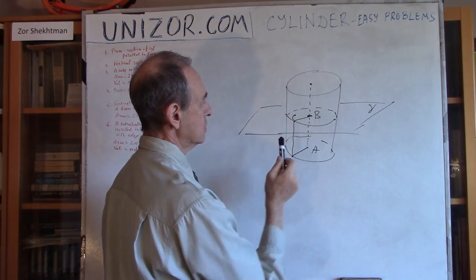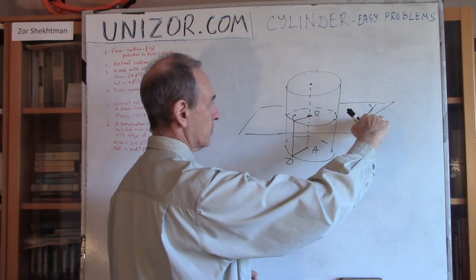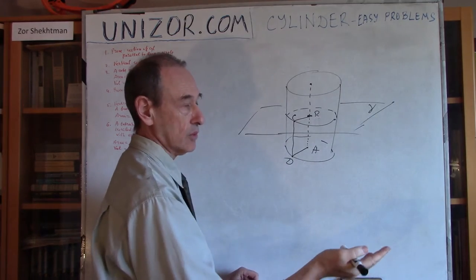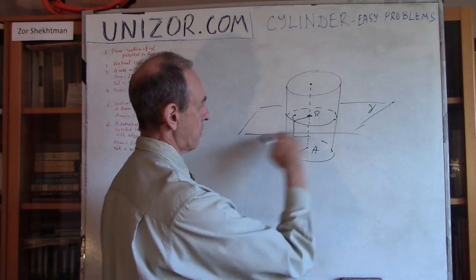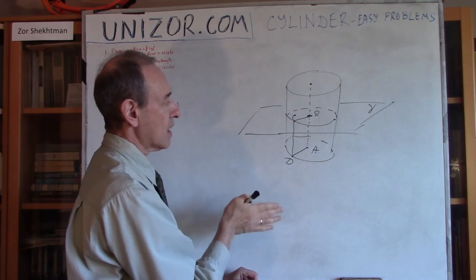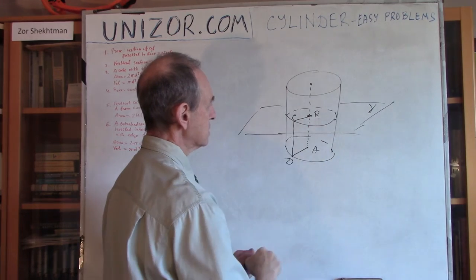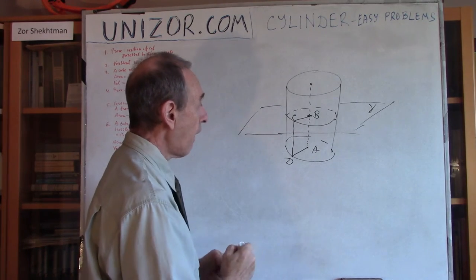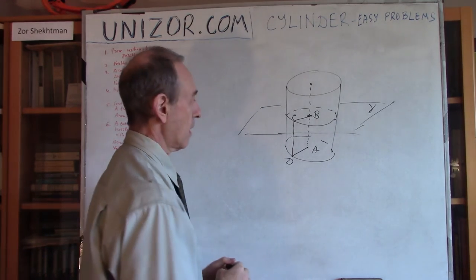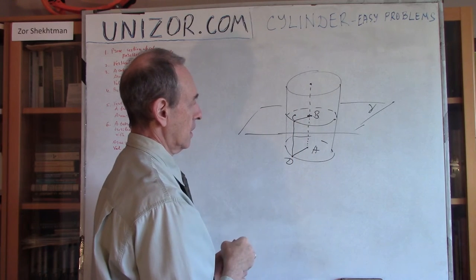Now, AB is parallel to CD because they are both perpendicular by construction. Now BC and AD are also parallel. Why? Consider the two planes — the gamma plane, which is my section, and the base plane — they are parallel among themselves, because that's exactly how I said I will draw gamma in this particular case: it's parallel to the base. So they are parallel to each other, the section and the bottom base. Now ABCD is a plane which cuts them both. So AD and BC are intersections of the plane which cuts two parallel planes, and there is a theorem that they are parallel to themselves. So BC and AD are parallel, and AB and CD are parallel.